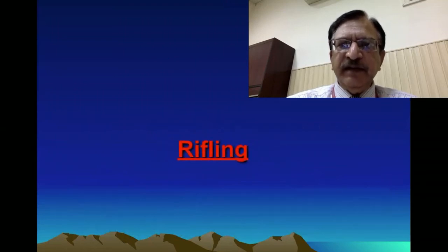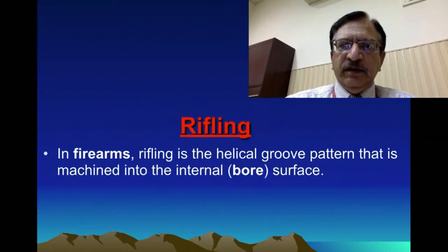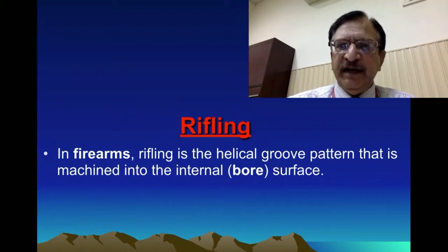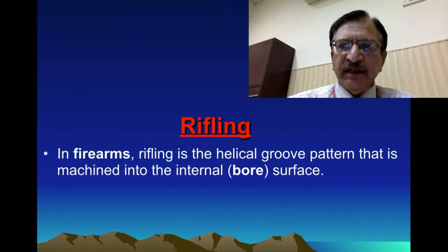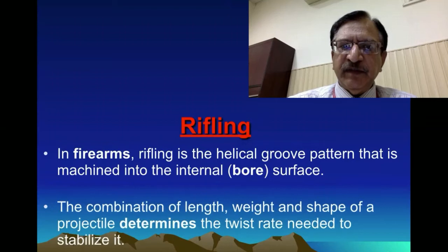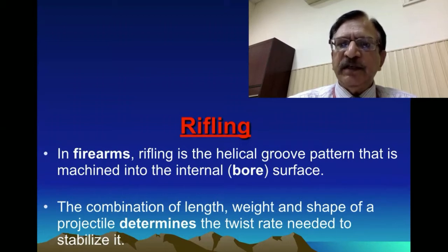Rifling is a special technique adopted in rifled weapons. In firearms, particularly the rifled weapon, helical grooves are engraved and machined into the internal bore surface. They are basically parallel lines grooved from the chamber end to the muzzle end. They run parallel to each other but are twisted or spirally arranged. The combination of length, weight, and shape of the projectile determines the twist rate needed, and this helps in stabilizing the bullet.